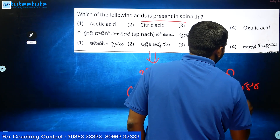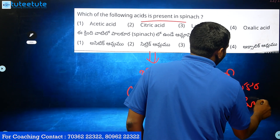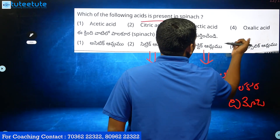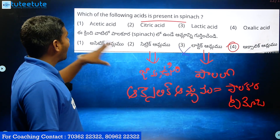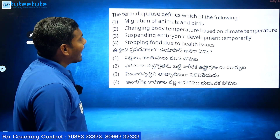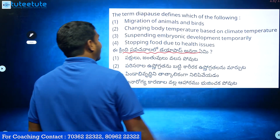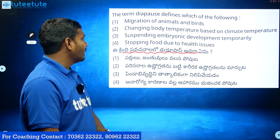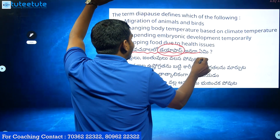Oxalic Acid is present in tomatoes, not in milk. So the answer for the acid present in tomatoes is Oxalic Acid.